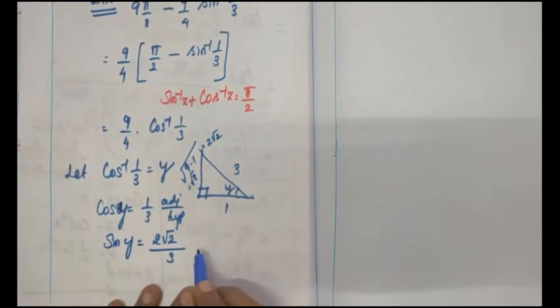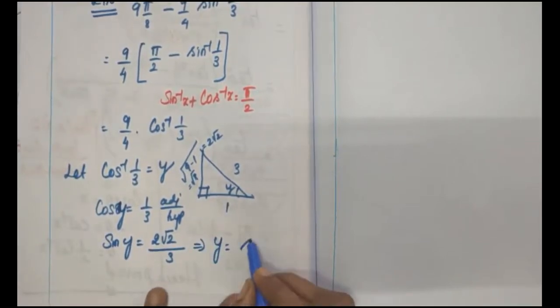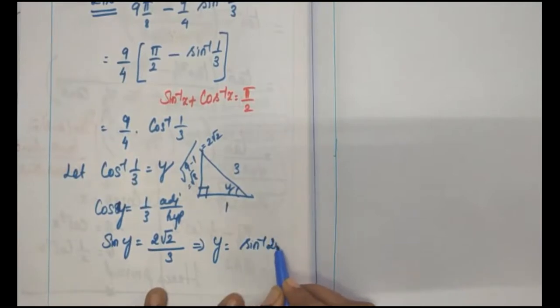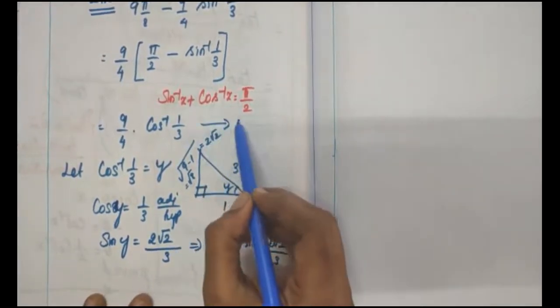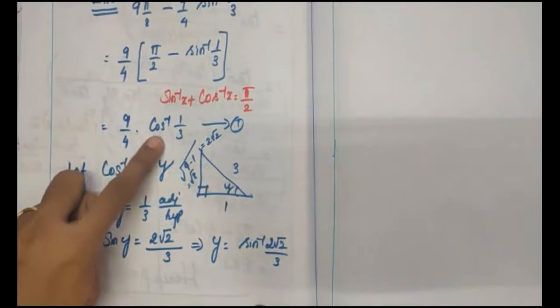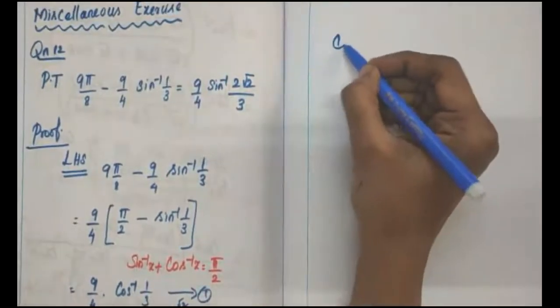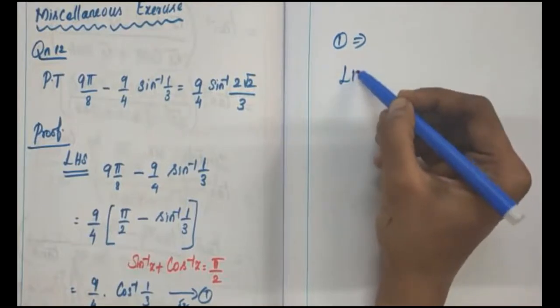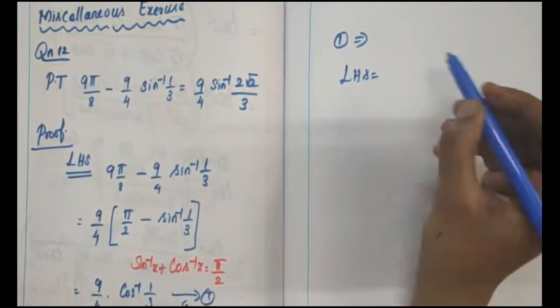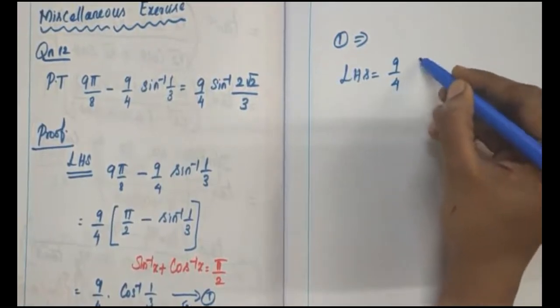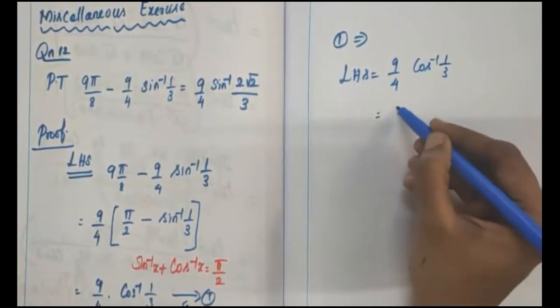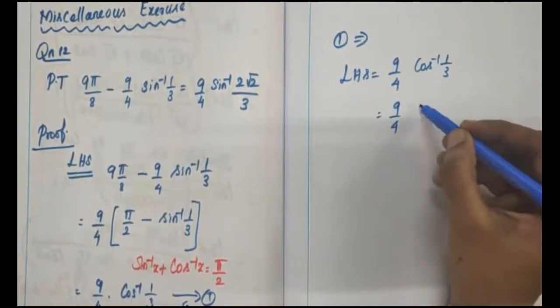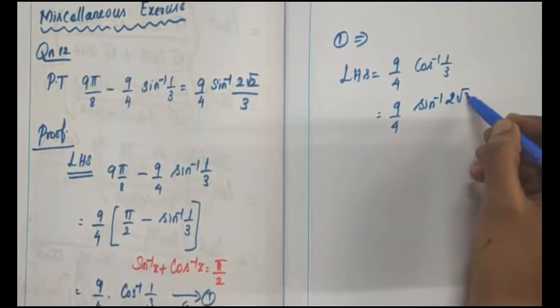sin(y) is calculated. y equals sin⁻¹(2√2/3). Then the expression 9/4 times cos⁻¹(1/3) equals 9/4 times y, and y equals sin⁻¹(2√2/3). Therefore the left hand side equals 9/4 times sin⁻¹(2√2/3).